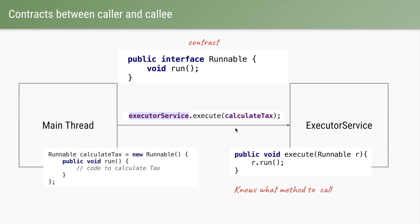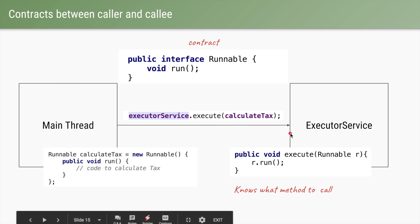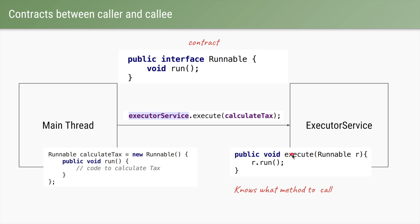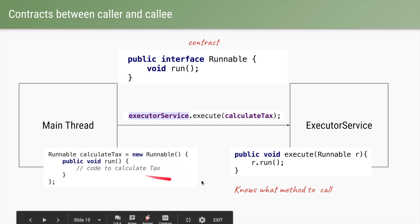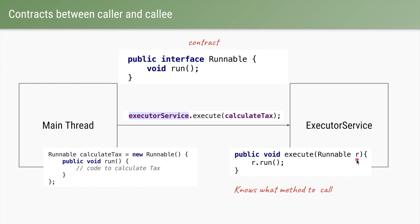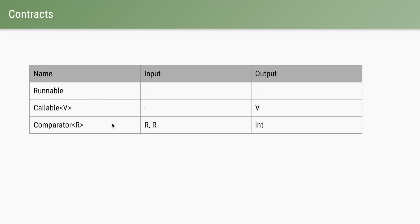These interfaces are actually contracts between the caller and the callee. The main thread has an anonymous inner class called new Runnable, passes this functionality to the executor service using executorService.execute, and the executor service accepts this algorithm in the form of a Runnable, storing it in a variable — say r. Eventually when the time comes it calls r's run method. Runnable is a contract which doesn't take an input and doesn't return an output. Callable, say of type String, does not take an input but does return an output — callable of V will always return V.